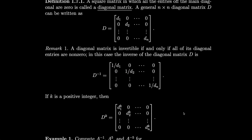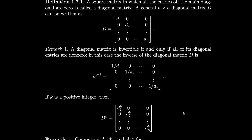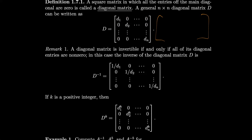If k is a positive integer, then D to the k is just the diagonal matrix where each of the entries is raised to the kth power. This makes sense because when you multiply these matrices, the zeros cancel out so many entries, and all you'd really have left is the diagonals being multiplied by each other.